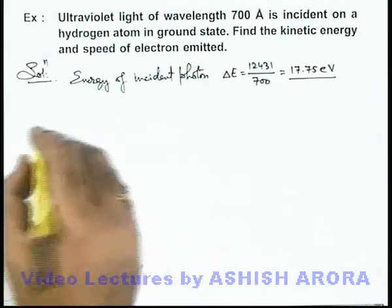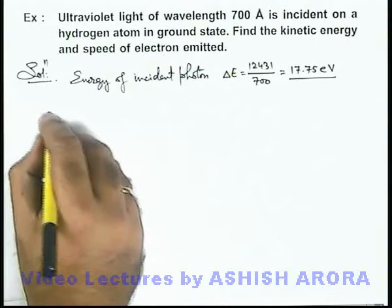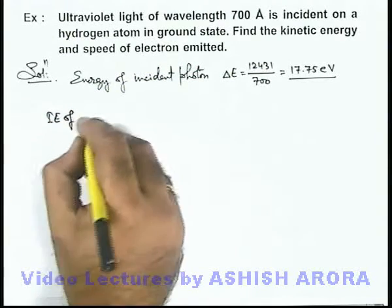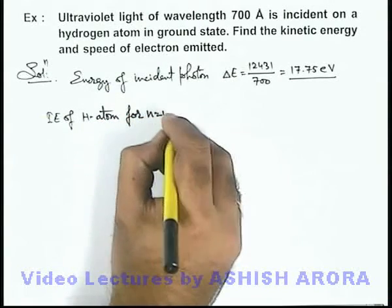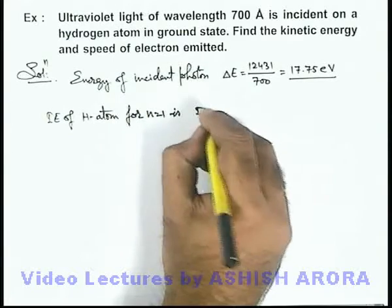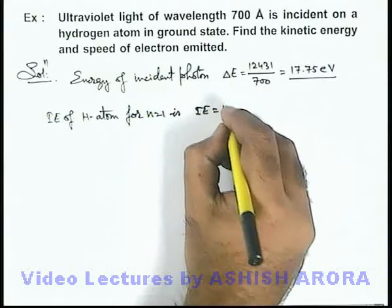And we know that ionization energy of hydrogen atom for n equal to 1 is 13.6 electron volts.